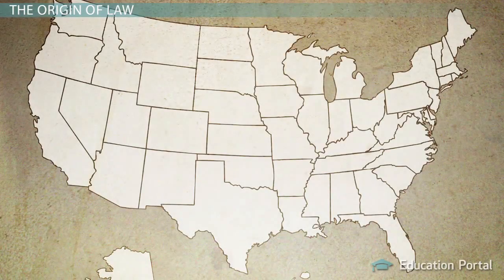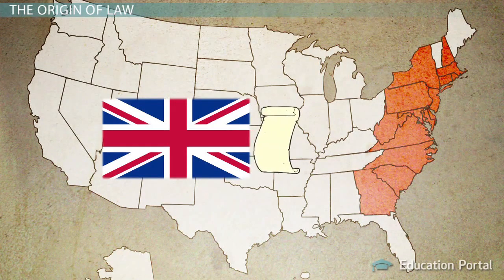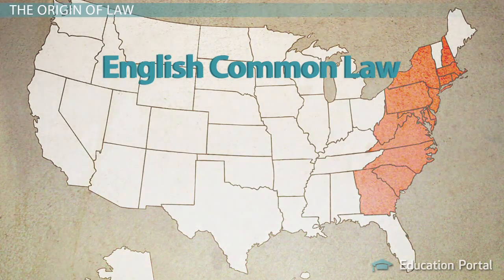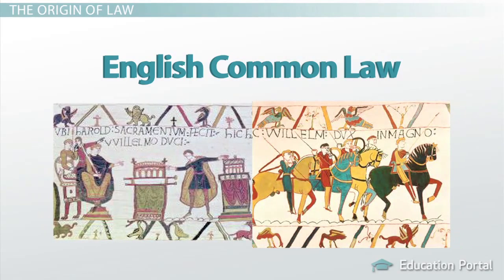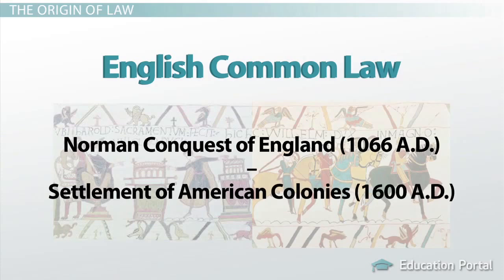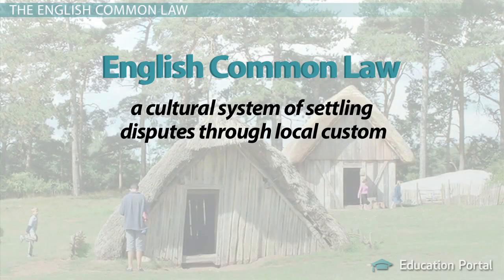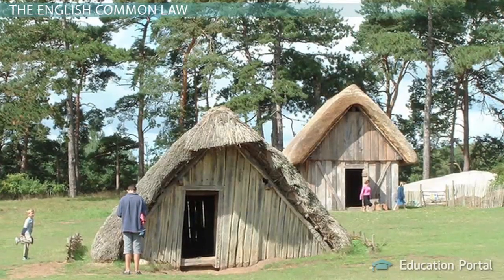So where does law come from? In America, our law system came from Great Britain. The settlers of the original thirteen colonies came from Europe, and they brought with them their own set of rules and principles to be used in their new society. The English common law was the system of law in England at that time, and was quickly adopted throughout the colonies. The English common law is rooted in centuries of English history. Much of the common law was formed in the years between the Norman conquest of England in the early 11th century and the settlement of the American colonies in the early 17th century. The English common law is based on a cultural system of settling disputes through local custom. The early tribes of England each held their own set of customs, but this system became increasingly formalized as those early tribal peoples came together and organized. These ancient customs are the basic principles that eventually became part of the American system of justice.